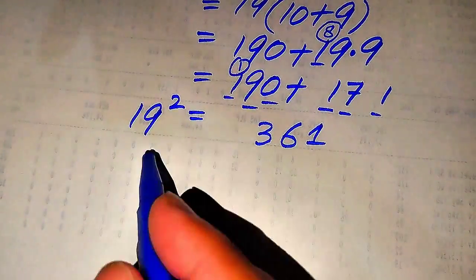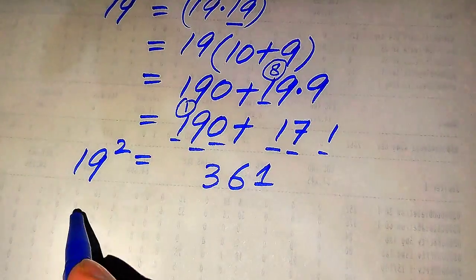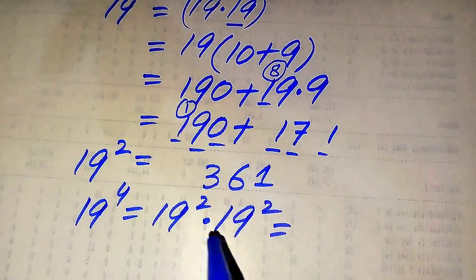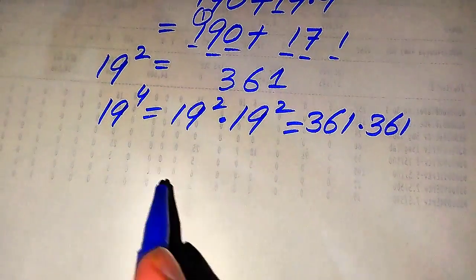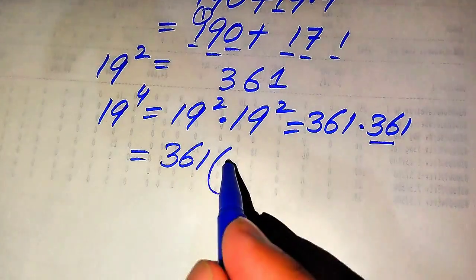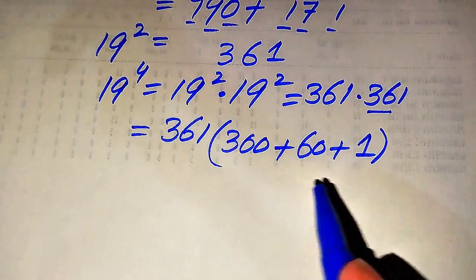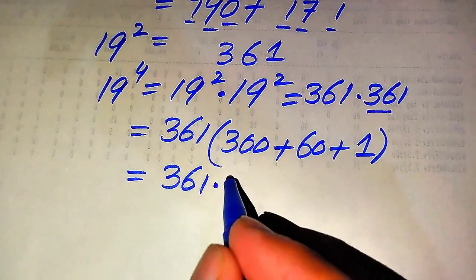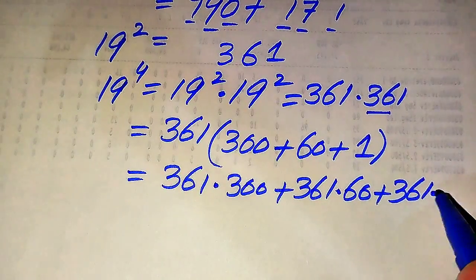After substituting 19 squared, we get 19 to the power of 4 equals 19 squared multiplied by 19 squared, which is 361 multiplied by 361. We break 361 as 300 plus 60 plus 1, then multiply 361 on each of these values: 361 times 300, plus 361 times 60, plus 361 multiplied by 1.